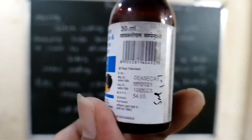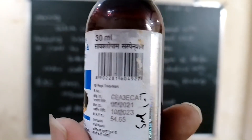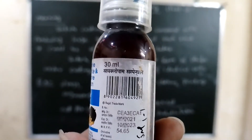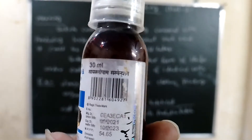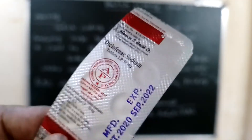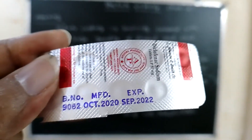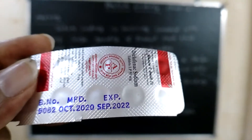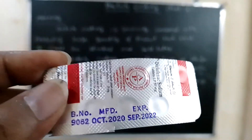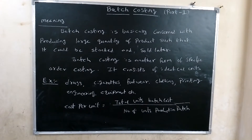The product batch number is CEA3, manufactured in a particular lot. Decoflin sodium tablet is another example — batch number 9082, manufactured October 2020, expiry September 2022. B number means batch number, the batch identification number. Examples such as medicines and toothpaste, drugs, etc. are shown in this class.